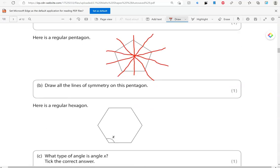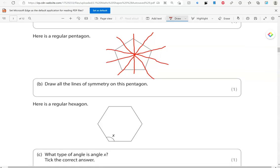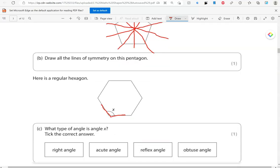Here is a regular hexagon. What type of angle is angle X? Tick the correct answer. Angle X is an obtuse angle.